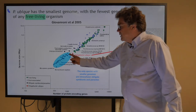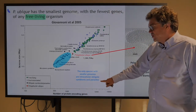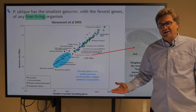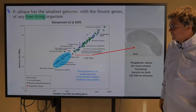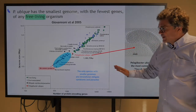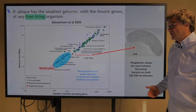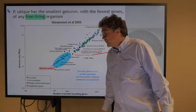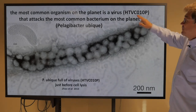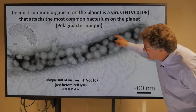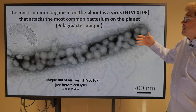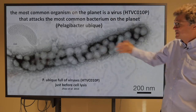The only species with smaller genomes are intracellular obligate symbionts and parasites — they're not free living; they depend on or live inside other life forms. One of the smallest is Mycoplasma genitalium. And the most common organism on the planet is the virus — these are the viruses inside the most common bacterium on the planet. That makes sense: the most common organism would be a virus that attacks the most common bacterium. Again, about 200 nanometers.